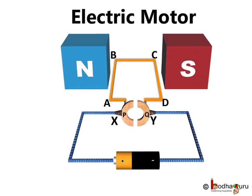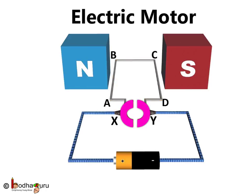It consisted of a rectangular coil ABCD which was kept in a magnetic field. Here, the two ends of the coil were connected to two halves, i.e., P and Q of a split ring. Also, the inner sides of these halves are insulated and attached to an axle.